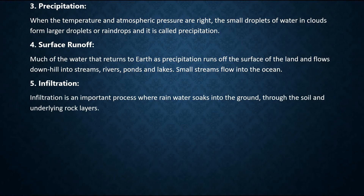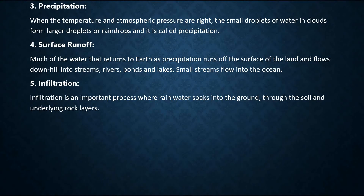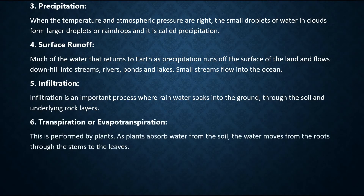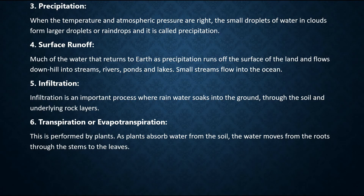Five, infiltration — an important process where rainwater soaks into the ground through the soil and underlying rock layers. Six, transpiration or evapotranspiration — this is performed by plants. As plants absorb water from the soil, the water moves from the roots through the stems to the leaves.